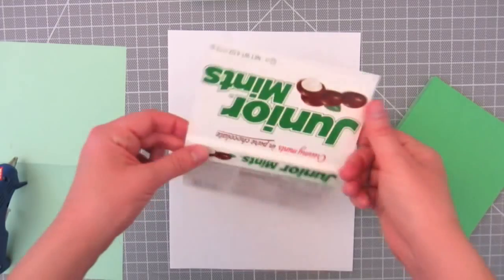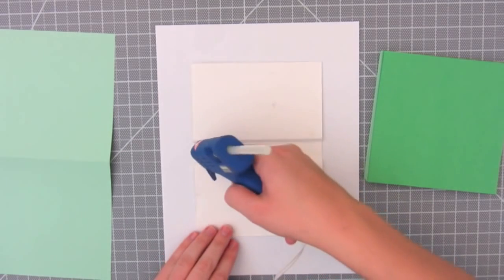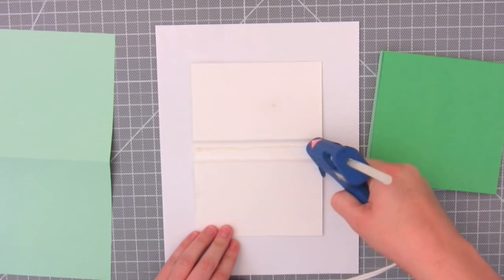After the pages are dry, glue the spine to the book cover. I'm using a glue gun for this part, but you can also use PVA glue.